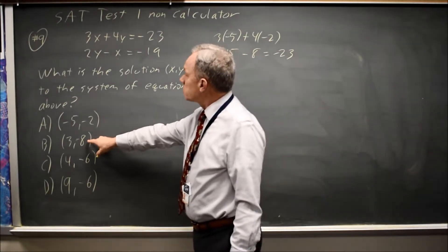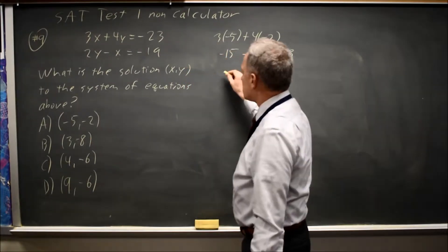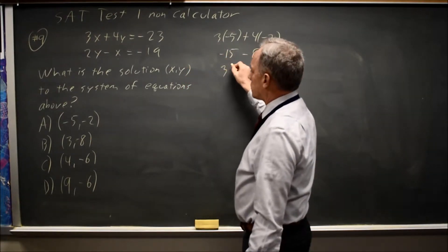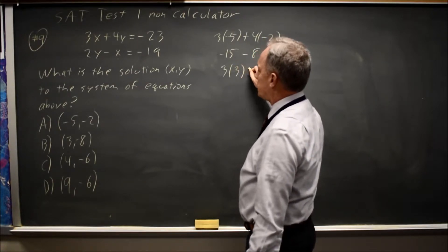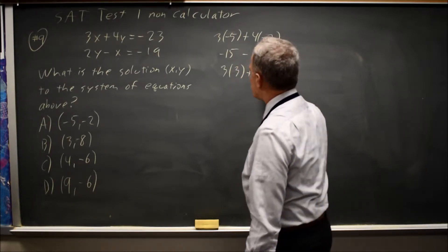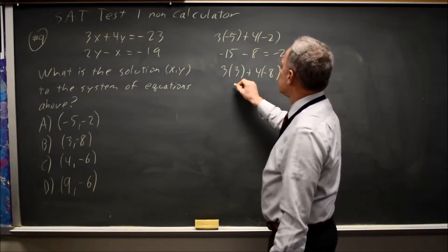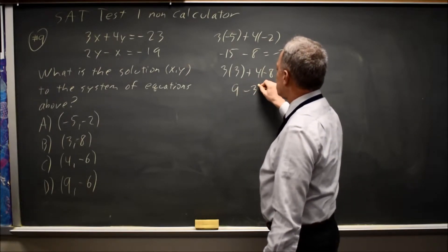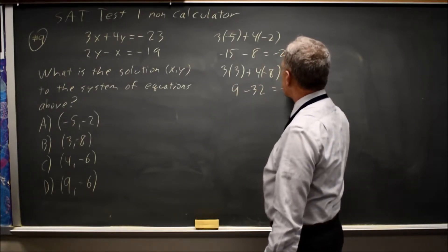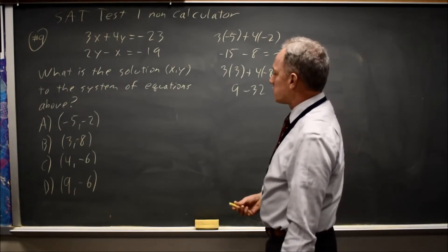Let's try point B in the same equation. 3 times x is 3 times 3, plus 4 times y is 4 times negative 8, that's 9 minus 32 equals negative 23. That worked also.